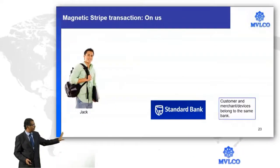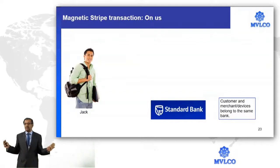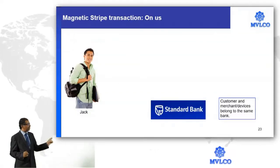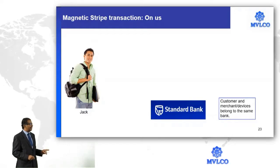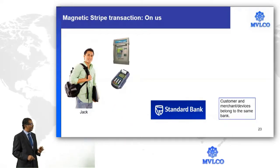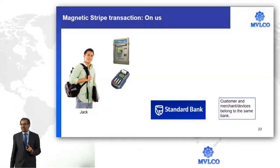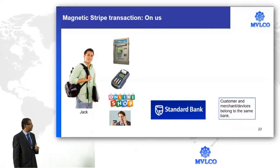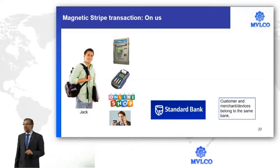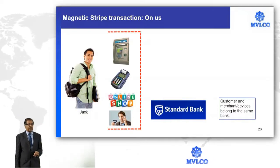Thank you for the overview. Now, an on-us transaction means that the issuer and the acquirer is one and the same. We have a customer called Jack. Jack has a card issued to him by Standard Bank. Jack can have four devices: two are card-present devices — ATM and the POS machine — and the remaining two, e-commerce website and the mail order/telephone order, are card-not-present transactions.